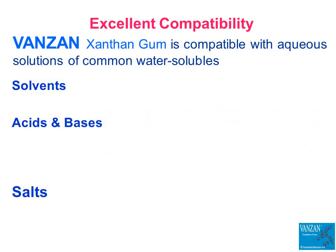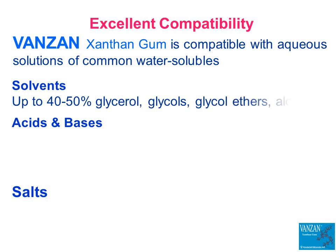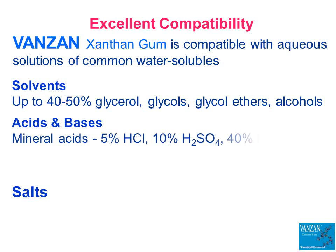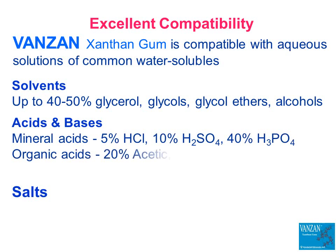Xanthan gum is compatible with aqueous solutions of common water-miscible solvents. For example, 1% Vanzan solutions can contain up to 40–50% glycerol, glycols, glycol ethers, and alcohols without precipitation of the gum. Xanthan gum exhibits excellent compatibility in many strong mineral acid solutions, including those containing 5% hydrochloric, 10% sulfuric, or 40% phosphoric acid, as well as in organic acid solutions such as those containing 20% acetic, citric, or tartaric acid.